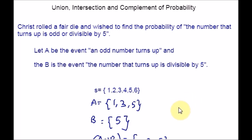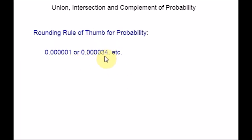Rounding rule of thumb for probability: In general, you should carry probabilities to at least 4 decimal places for intermediate steps if you are giving your answer in decimals. We often round our final answer to 2 or 3 decimal places. For extremely small probabilities, it is important to have 1 or 2 significant digits — note that significant digits should be non-zero digits. If you are doing probability problems on a computer or calculator, very small values will be displayed in scientific notation.